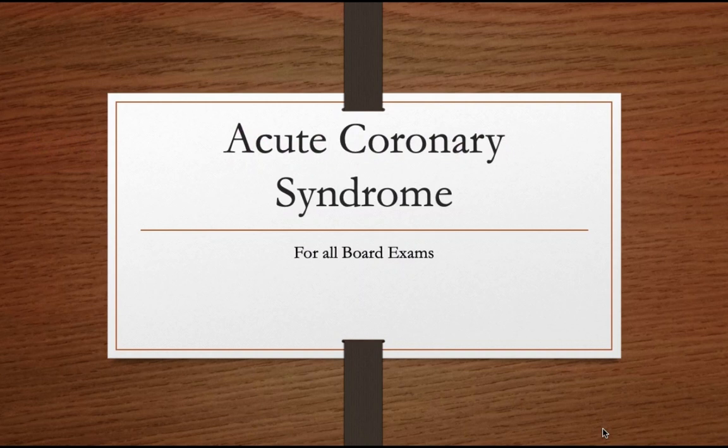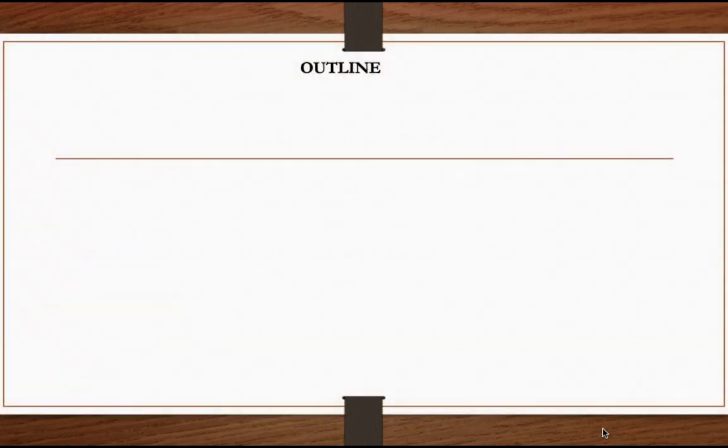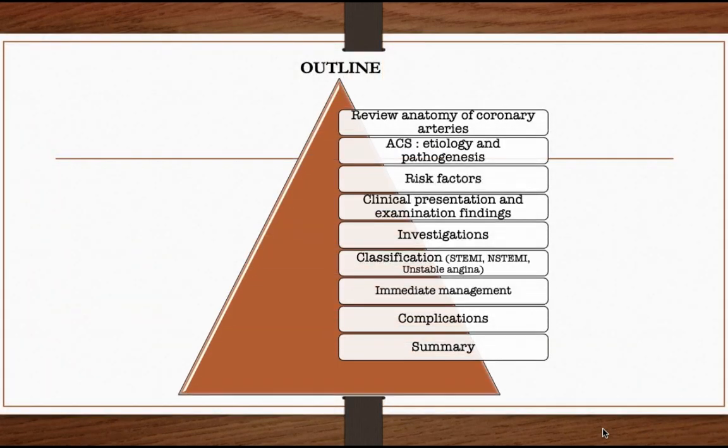Hello and welcome to today's presentation. Today we are going to look at acute coronary syndrome. In outline, we will review the anatomy of the coronary arteries, then look at etiology and pathogenesis, risk factors, clinical presentation, physical examination, investigation, classification into STEMI, non-STEMI, and unstable angina, immediate management, complications, and a summary.